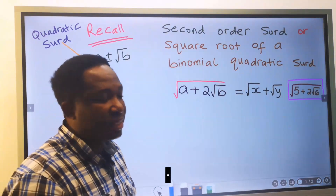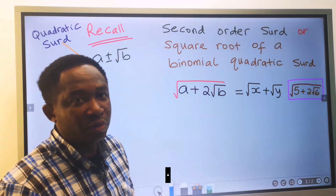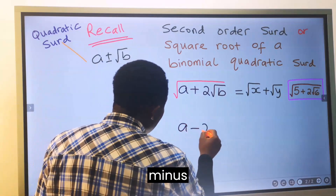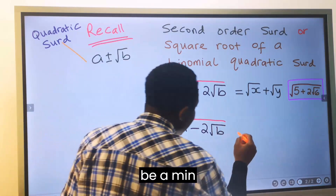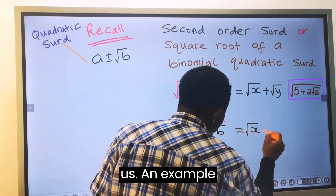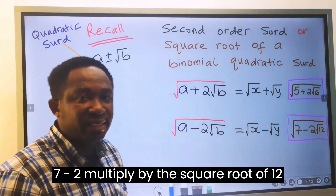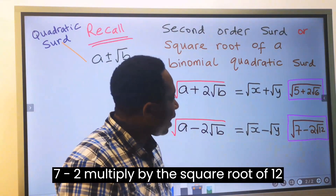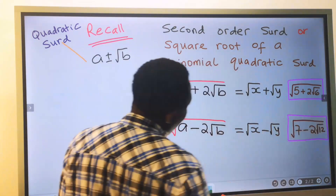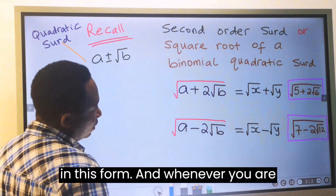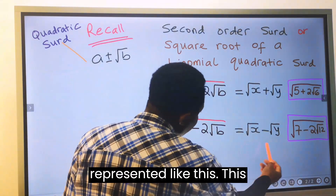A good example is the square root of 5 plus 2 multiplied by the square root of 6. Likewise, if we have A minus 2 multiplied by the square root of B, our answer will be represented in the form of the square root of X minus the square root of Y — here is a minus, so here must also be a minus. An example is the square root of 7 minus 2 multiplied by the square root of 12. Whenever you are given a quadratic surd of the plus form, your answer must be in the plus form, and for the minus form, your answer must be represented with a minus.